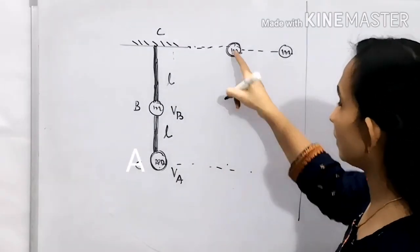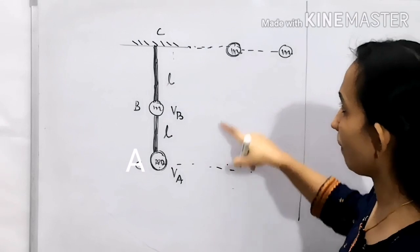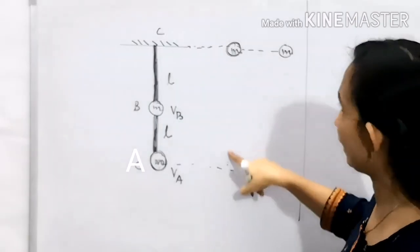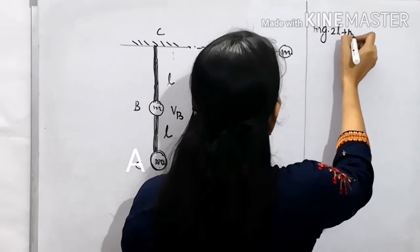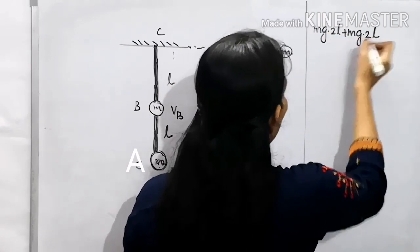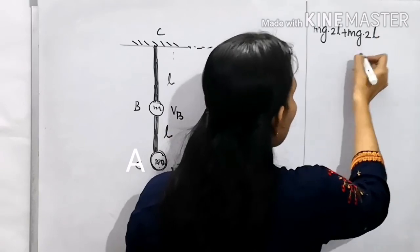For this mass, the potential energy is L plus L, so total height is equal to 2L. So potential energy is Mg into 2L plus Mg into L. That is Mg into 2L plus Mg into L, that is the potential energy.